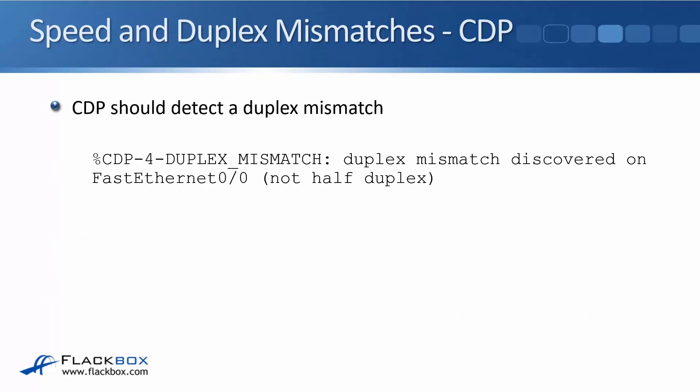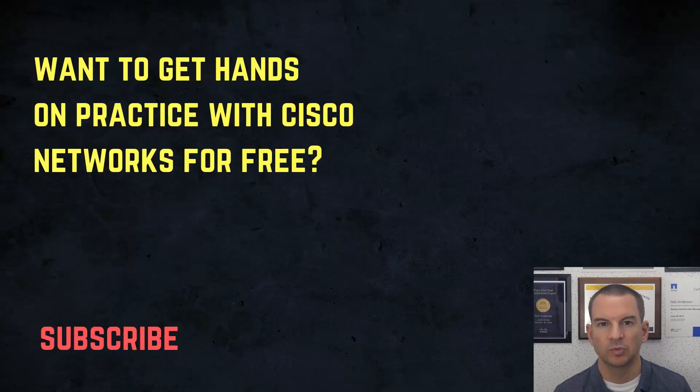If you do have a duplex mismatch, CDP — the Cisco Discovery Protocol — should detect that and log it, as shown in this example. You'll see a message like: 'duplex mismatch discovered on FastEthernet 0/0, not half duplex.'